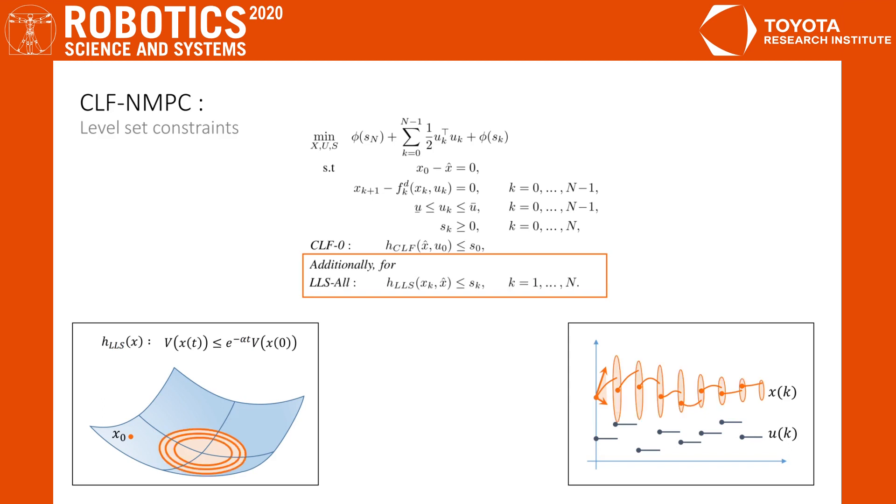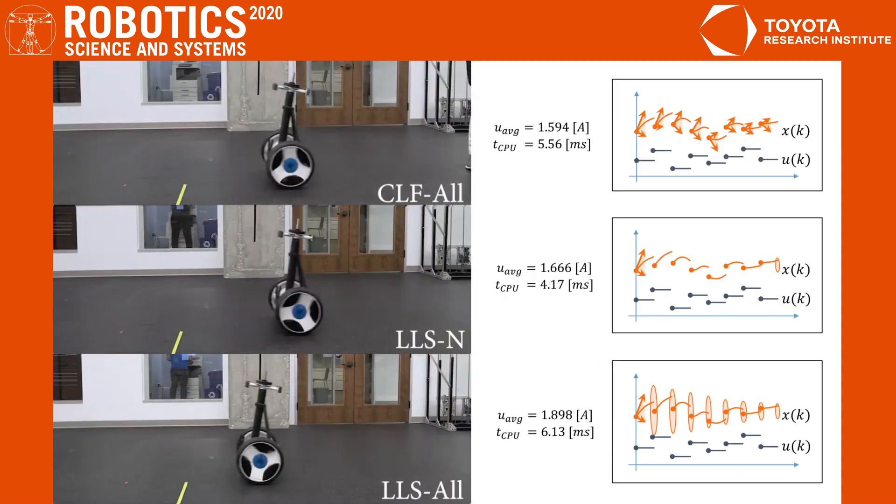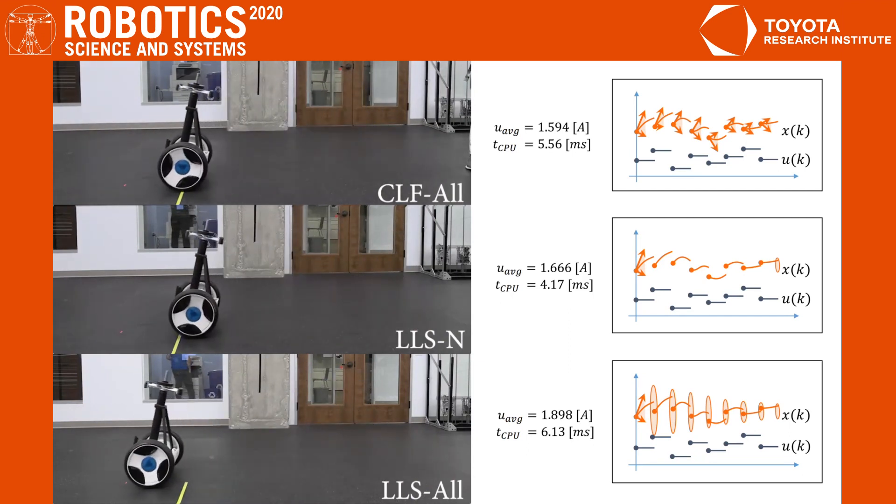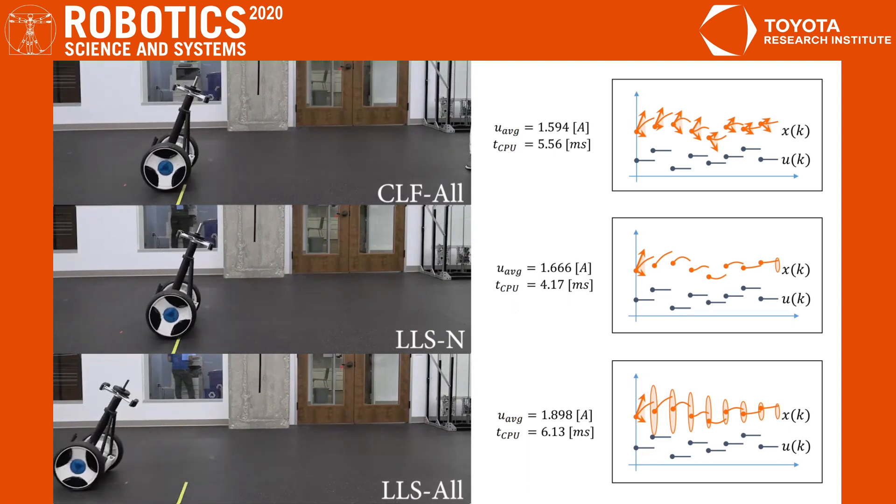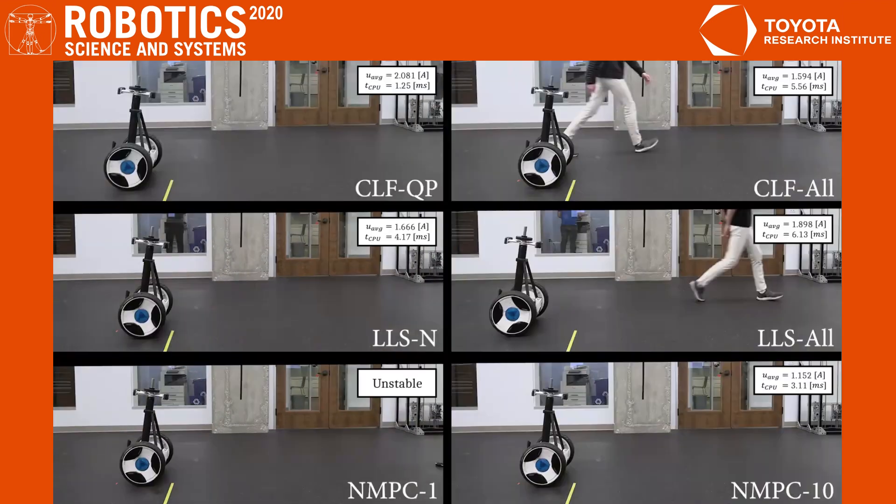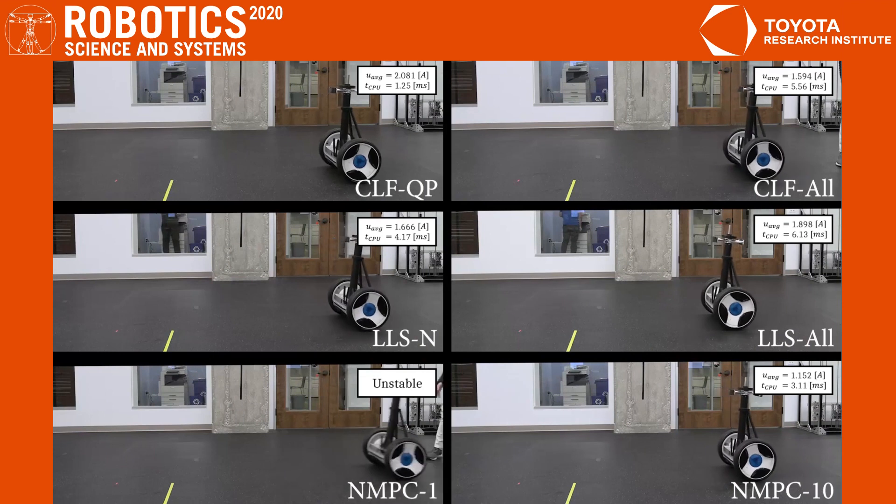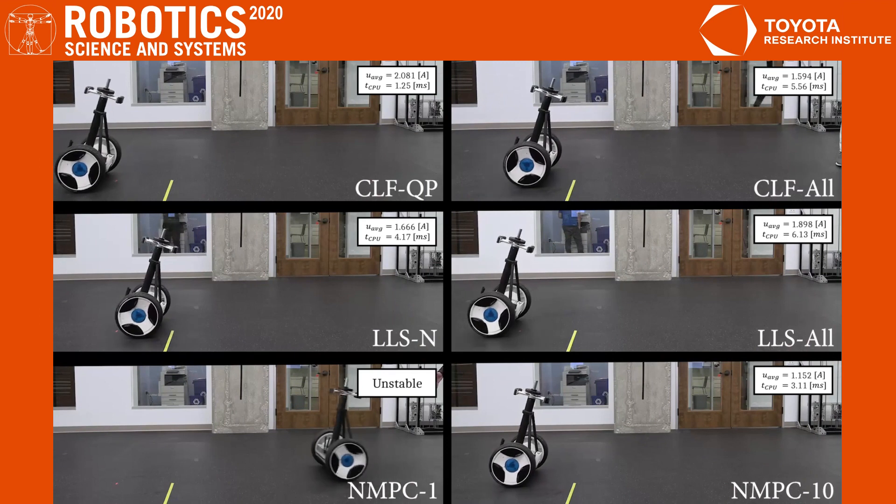Moreover, we can consider not only constraining the final state, but to constrain each of the intermediate states as well, resulting in this contracting funnel along the horizon. We took all these three presented formulations and tested them with, again, the same reference trajectory. All formulations successfully stabilize the system. Looking at all experiments together, we see that the combined CLF-MPC approaches outperform the CLF-QP, and compared to the MPC only formulations, there is no need for additional cost tuning to obtain a stabilizing controller.